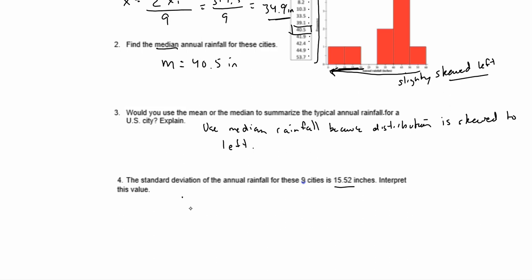So what does that mean? Well, what that means is that the annual rainfall typically varies by 15.52 inches from the mean rainfall of 34.9 inches.